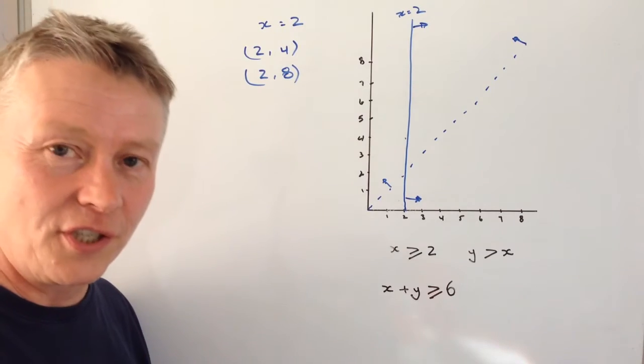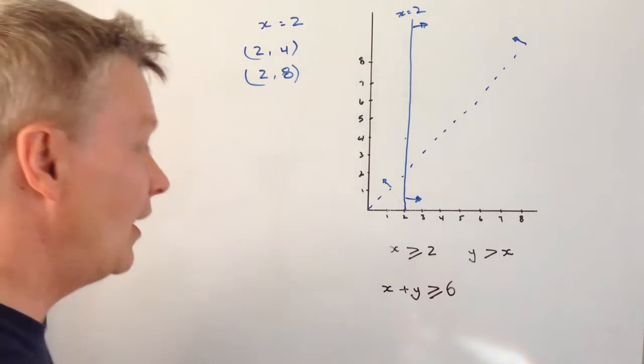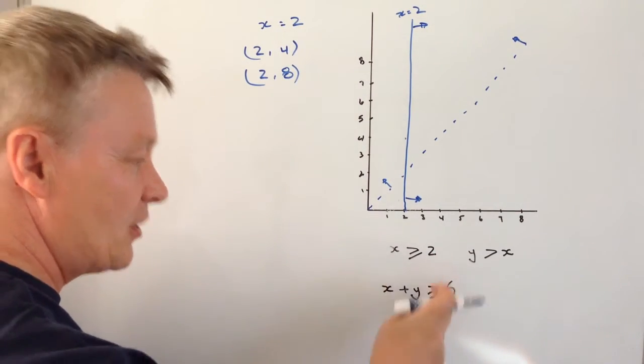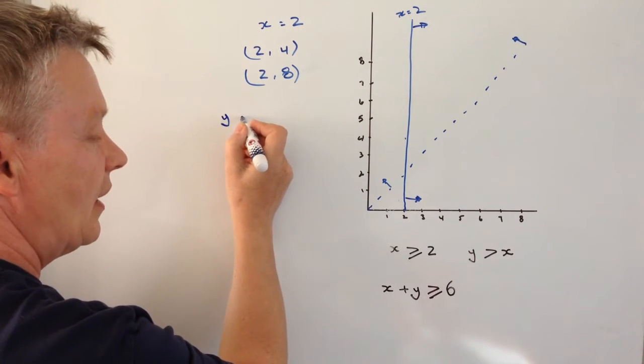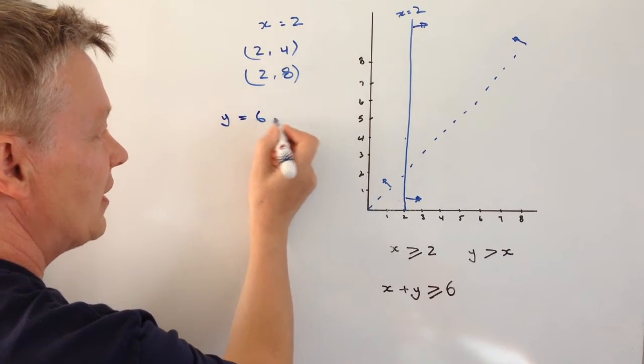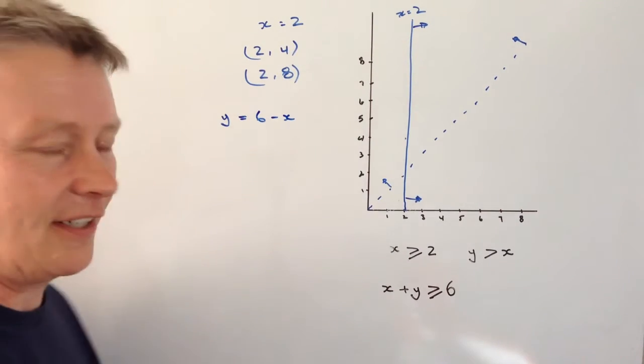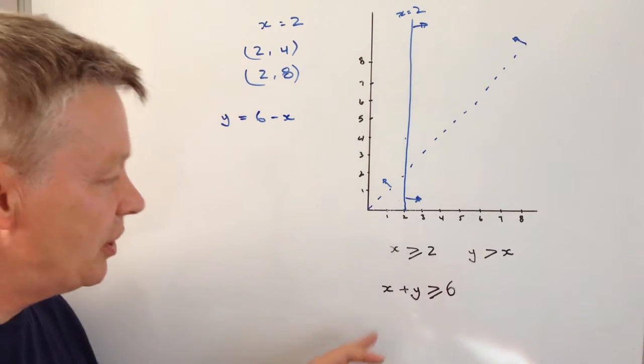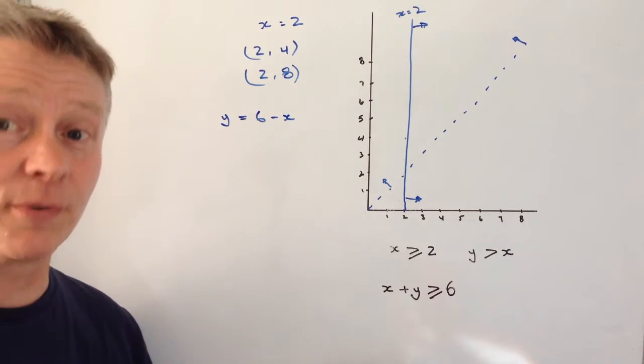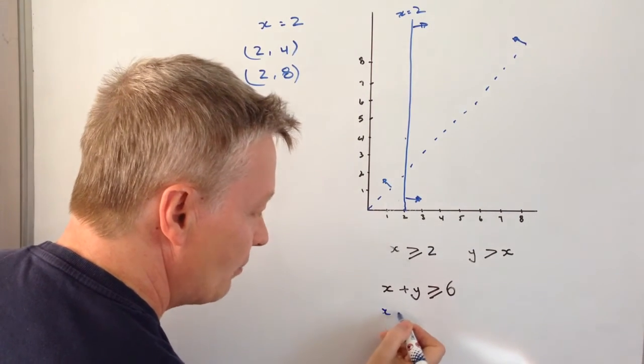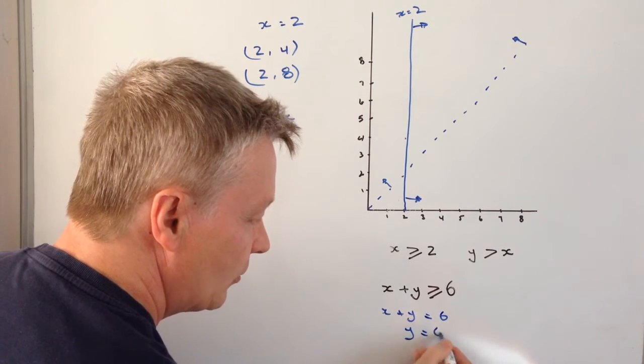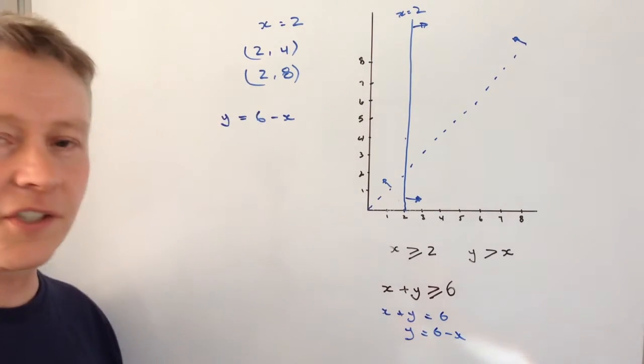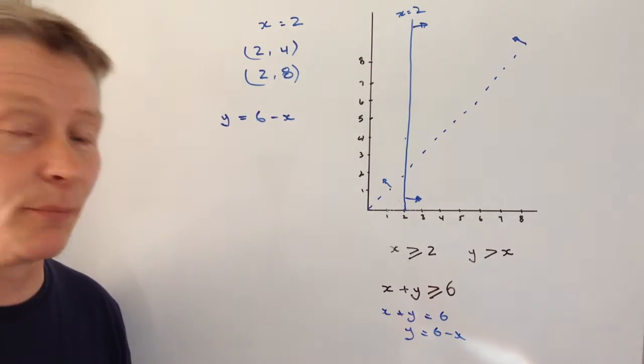The easiest way of doing that is just to change the equation around. So if x plus y is greater or equal to 6, let's just change it to y equals 6 minus x. What I've done there is I've just used a little bit of algebraic manipulation there. I've said that x plus y equals 6 and therefore y equals 6 minus x. And it just makes my calculations a little bit easier.